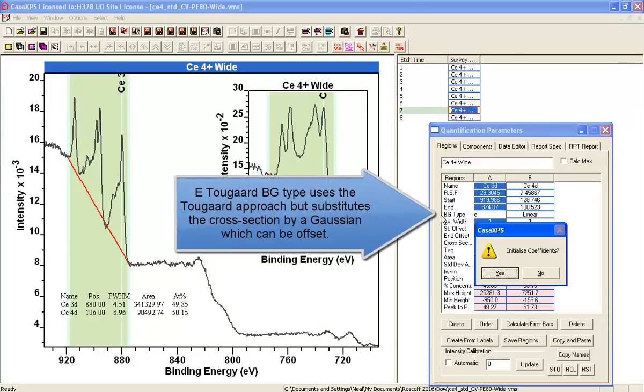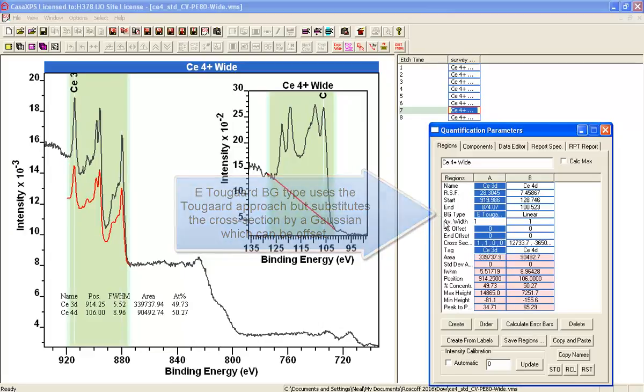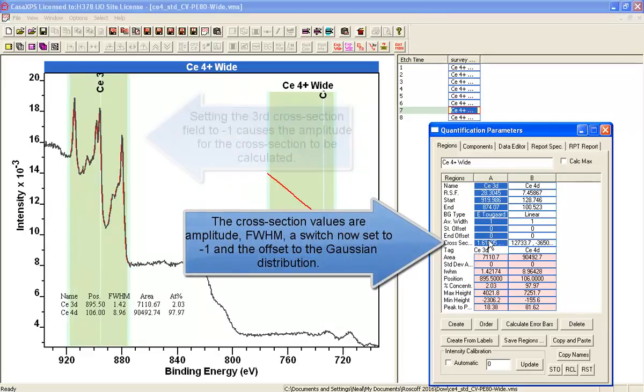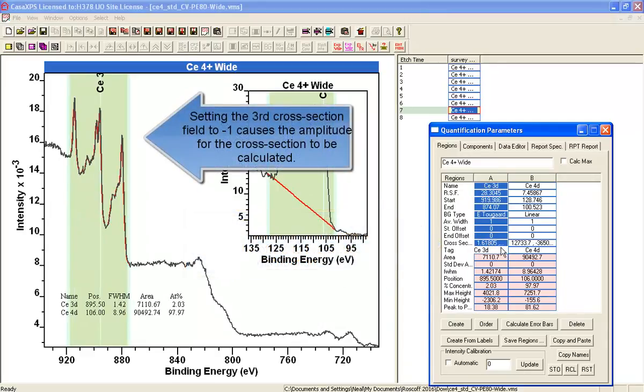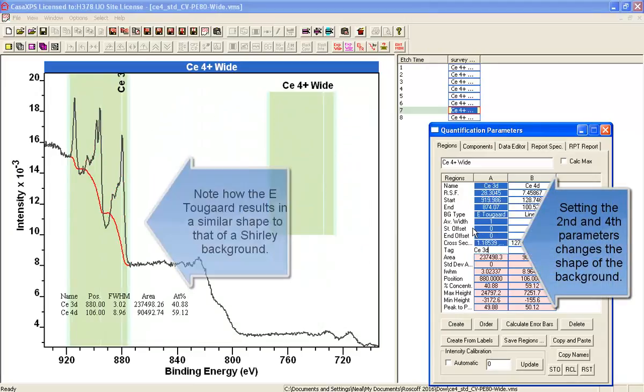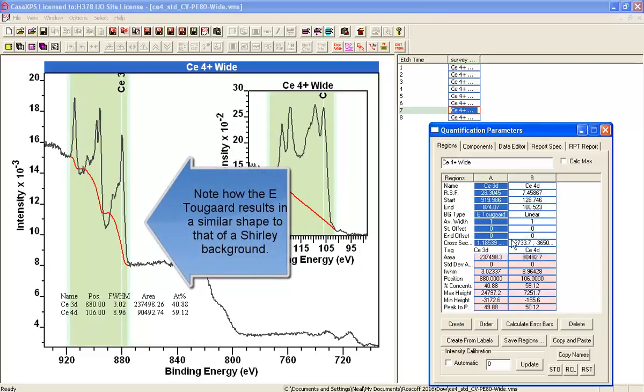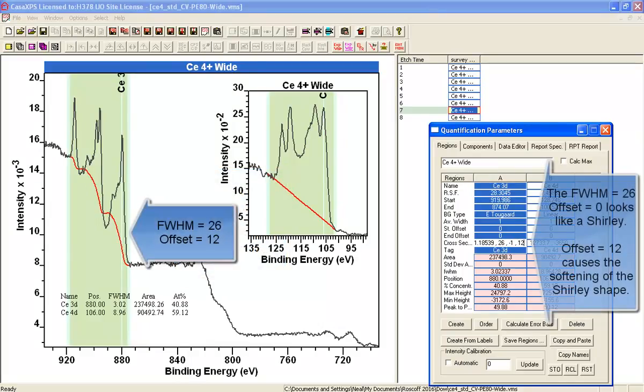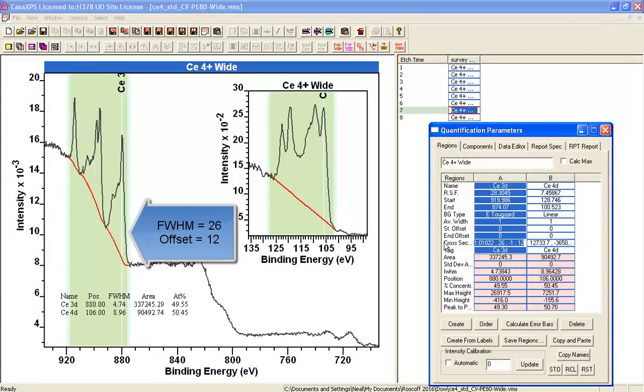And then finally, we've got another form of the Tougaard formalism, where we use a Gaussian, which we can offset, and it can have a specific full width at half maximum for the Gaussian. The combination of the full width at half maximum and the offset can alter the shape of the background from something that looks like a regular Shirley-type background, and we can move it so that it ceases to cut through the data by adjusting the offset.